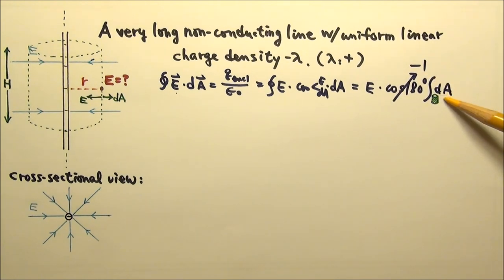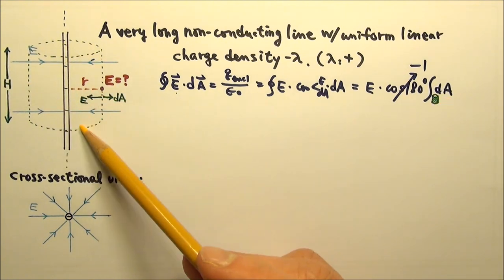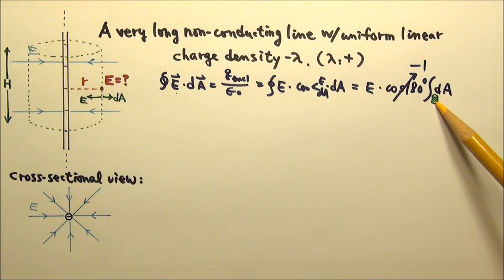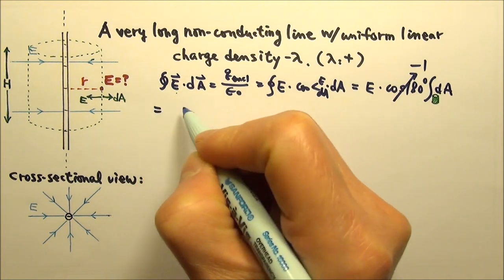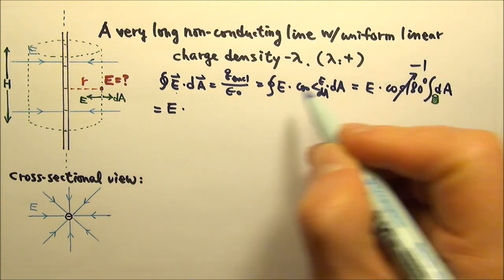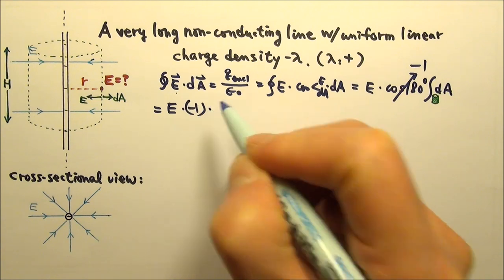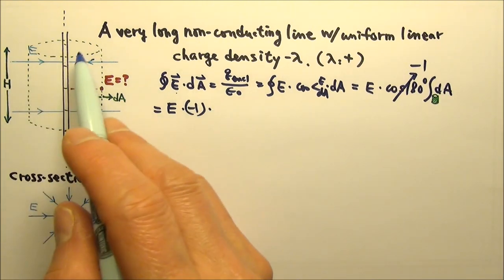The integral dA only includes the curved part of the Gaussian surface. And the curved part only is not a closed surface, so I did not draw a circle over here. So the flux now equals E times negative 1 times the area of the curved part.